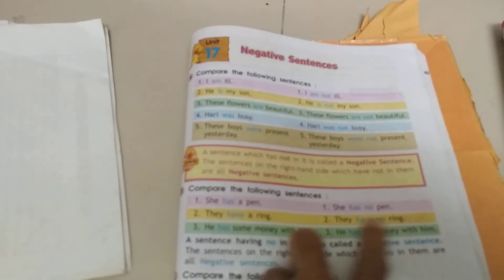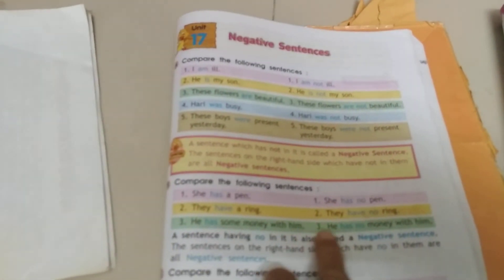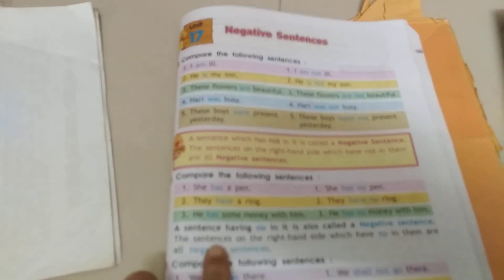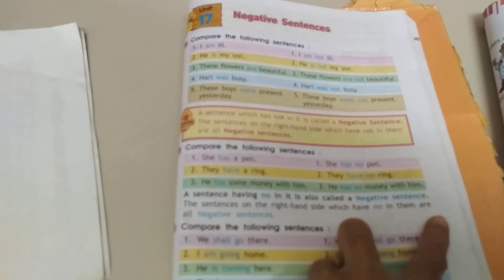She has a pen. She has no pen. They have a ring. They have no ring. He has some money with him. He has no money with him. Sentence having no in it is also called a negative sentence. Sentences on the right hand side which have no in them are called negative sentences.